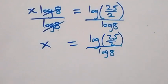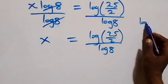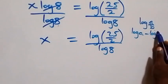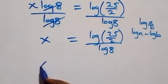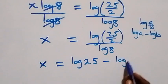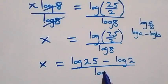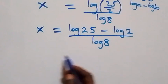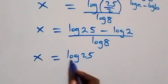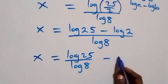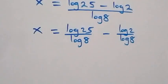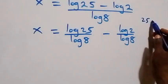From what we have here, this follows the law of logarithms: log(a/b) is the same thing as log a minus log b. That is, from here we have x equals to log 25 minus log 2, then over log 8. Then here we separate this into two fractions and we have x equals to log 25 over log 8 minus log 2 over log 8.